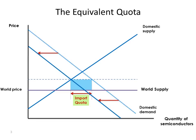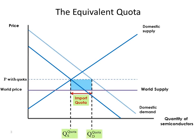How much will the domestic suppliers choose to produce from this new domestic demand curve? We find the equilibrium where domestic demand is equal to domestic supply.